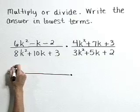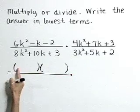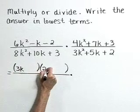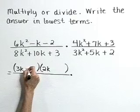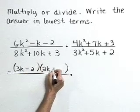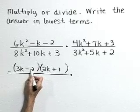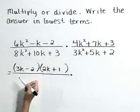Starting with our first numerator and using trial and error, factors of 6k squared that we can use are 3k and 2k. Factors of negative 2 that will make this work are minus 2 and plus 1. Quickly check: inner product negative 4k plus the outer 3k gives negative 1k.